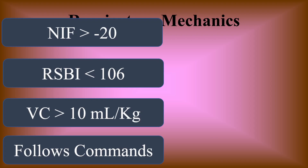The RSBI — rapid shallow breathing index — you want that to be less than 106, representing a good frequency-to-tidal-volume ratio. It's calculated as frequency divided by tidal volume. If they're tachypneic and pulling low volumes, they won't meet that requirement. For vital capacity, you want 10 mL per kg or more — the patient takes a deep breath in and blows all the air out to get that value.